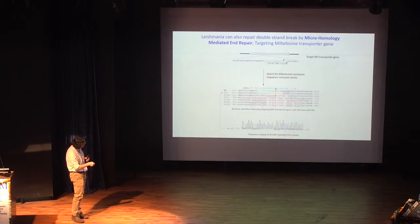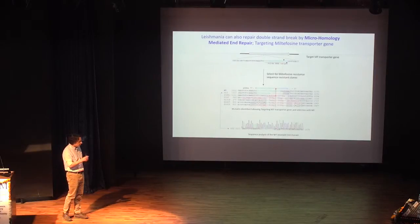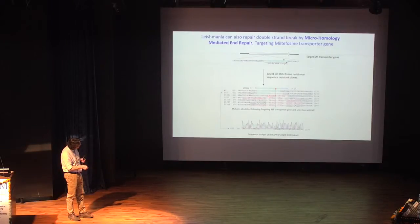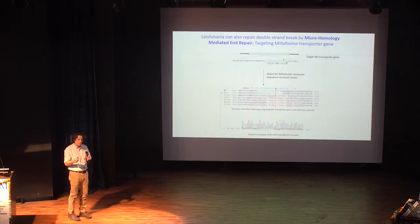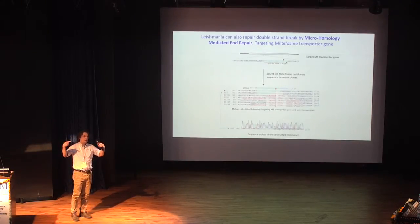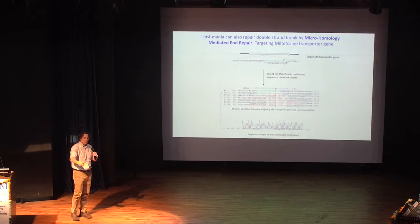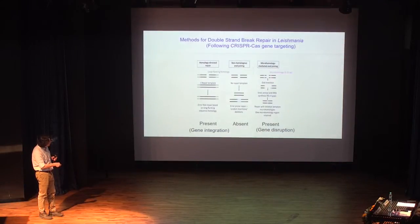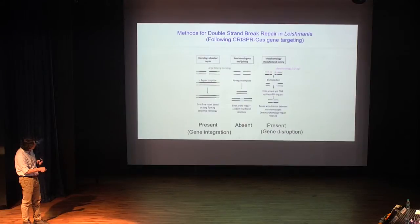We targeted a guide RNA to cut the miltefosine transporter gene, put it into leishmania, and we got resistant cells. When we sequenced several of the clones, we found that everywhere there was a clone that survived, there was a duplication. There was a homologous sequence on each side of the cut. So what the parasite did was it looked for homologous sequences and used those to repair the chromosome — using sequences from the same chromosome, not the template chromosome.